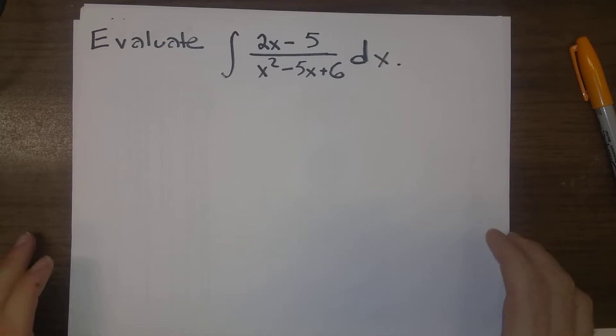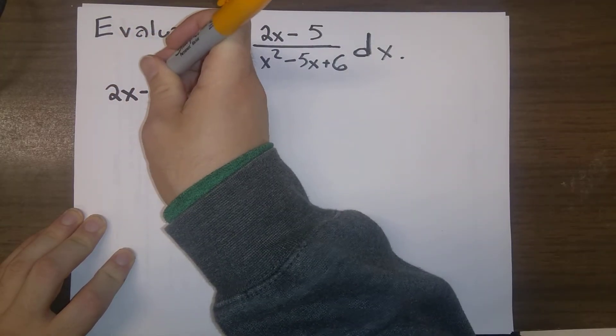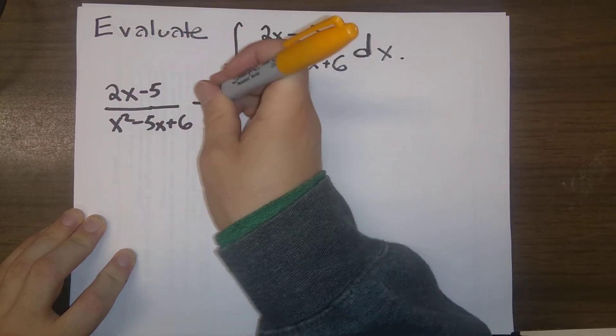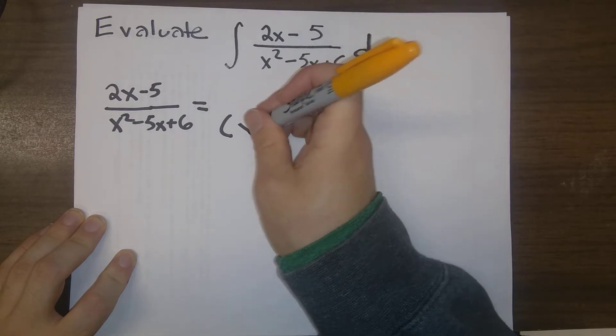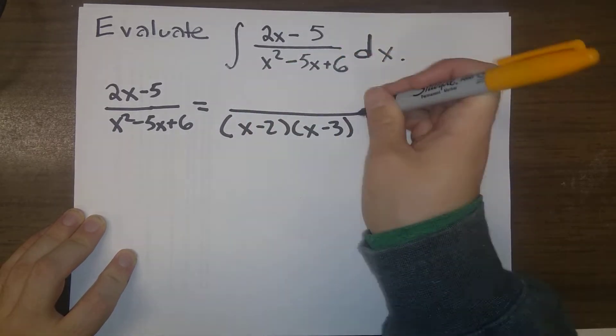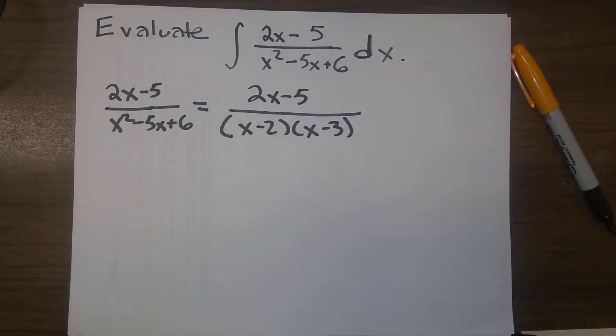And also we can factor 2x minus 5 over x squared minus 5x plus 6. We can observe that the denominator factors as x minus 2 times x minus 3. So this is our setup.